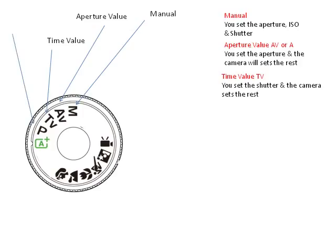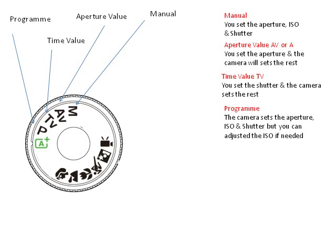P is again self-explanatory — it's fully programmed. But it will give you the flexibility to change your ISO. Changing your ISO is basically changing the sensitivity of your sensor.